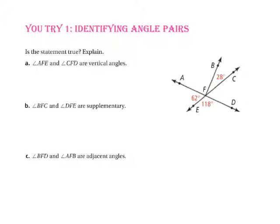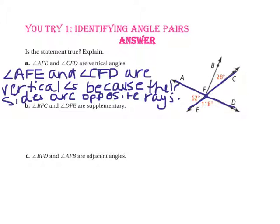Pause the video and do You Try number 1. Part A says angle AFE and angle CFD are vertical angles. Ray FA and ray FD are opposite rays, and ray FE and ray FC are opposite rays. Therefore, angle AFE and angle CFD are vertical angles — true.